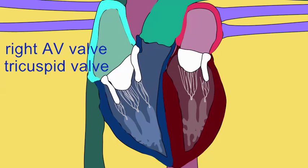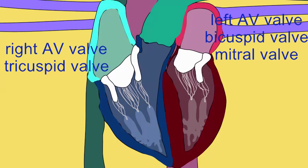The right AV valve possesses three cusps and is also known as the tricuspid, while the left AV valve possesses two cusps and is also known as the bicuspid and can also be called the mitral valve. And so left AV valve, bicuspid, and mitral valves are synonyms referring to the same valve.